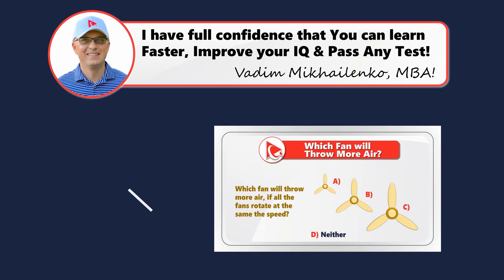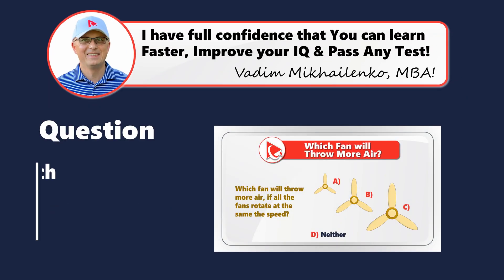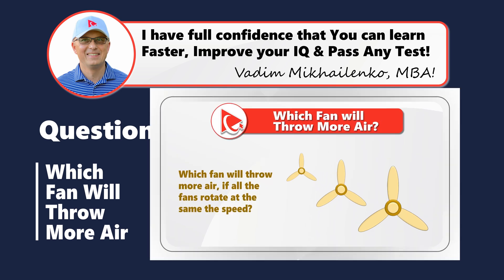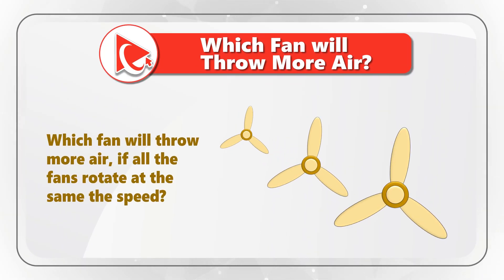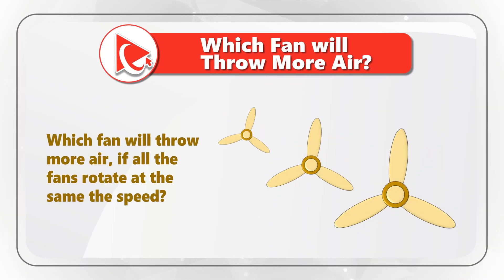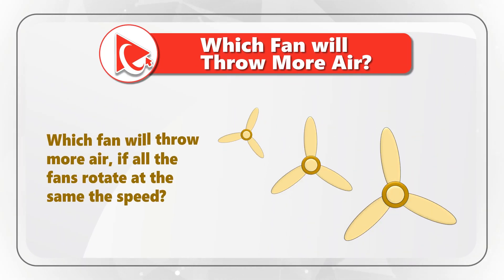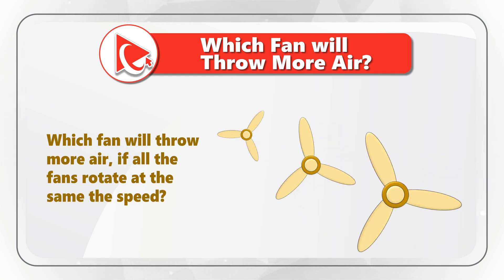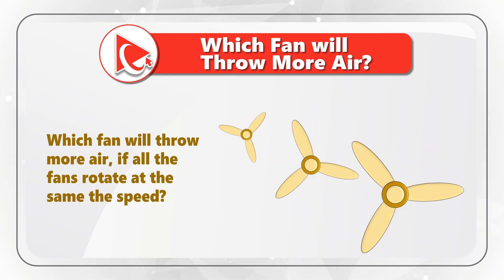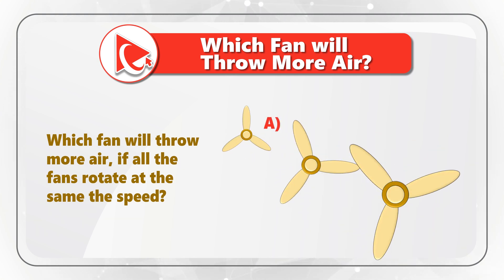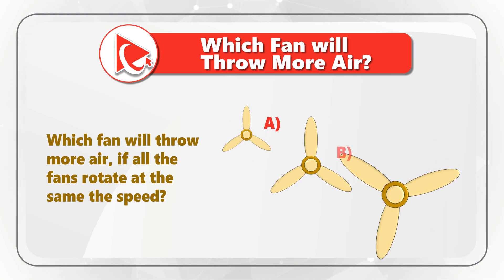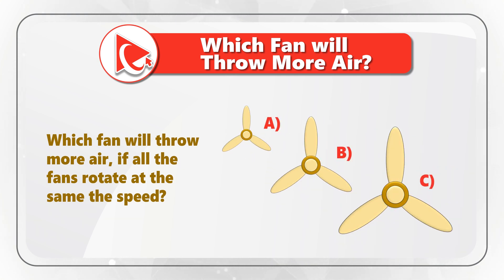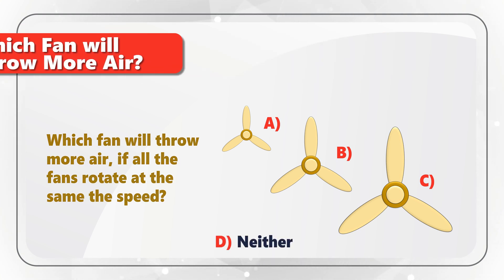This is one of the most exciting questions because it allows you to test your analytical skills and understanding of physics. You need to determine which fan throws more air if all the fans rotate at the same speed. The choices are fan A, fan B, fan C, and last but not least, choice D, neither fan. Take a close look to see if you can come up with the answer.